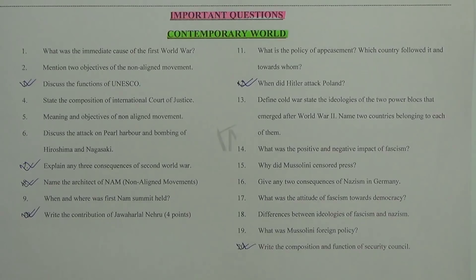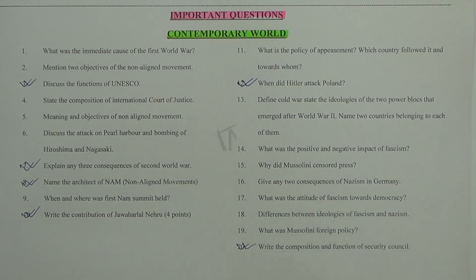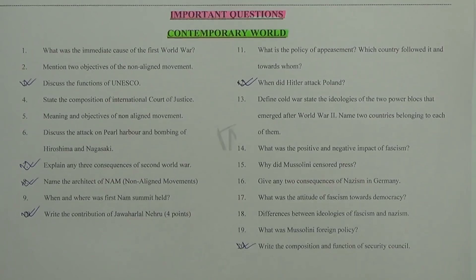Students, go through all these questions. You can download them from the description box — I will put a PDF there. My humble request: do not write your own story. Write whatever is in the history book, point by point. For example: Point 1 — this year, this happened. Point 2 — what was the reason for the war or the Non-Aligned Movement. Always keep your paper clean with nice handwriting. If you have any questions related to what I have suggested, comment in the comment box or check the description box. All the very best for your History and Civics exam!